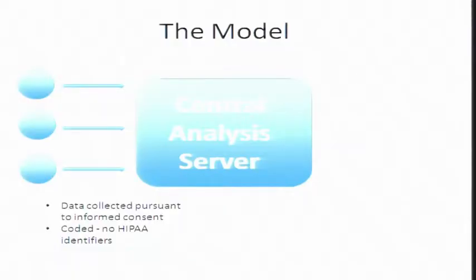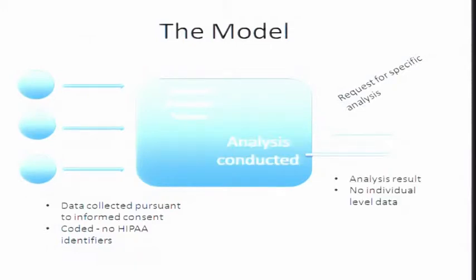I think it's a good exercise that maybe can also be used for some of the other models. In my simplistic way, this is the model. You got data coming from the outside, collected pursuant to informed consent, it's coded, no HIPAA identifiers, and it goes into the central analysis server in a de-identified form. People on the outside request that the central analysis server do an analysis, and it spits out the analysis without individual level data.